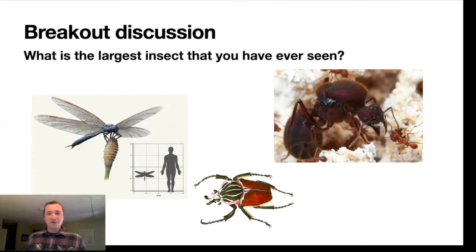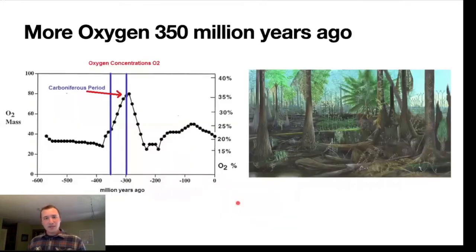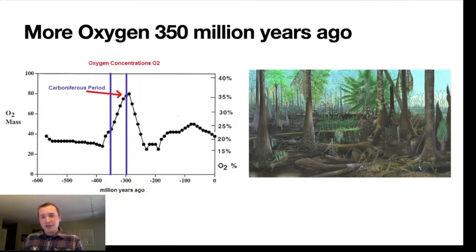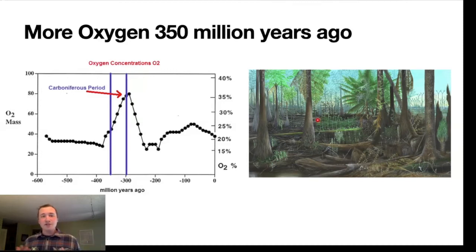We heard from some of you about the largest insects you've seen in the Spokane area and in travels. Let's now step back in time and talk about a historic period on Earth called the Carboniferous. The interesting thing about the Carboniferous period is that there was an increase in the capacity of plants on Earth to absorb carbon dioxide and produce oxygen. This increase was driven by the evolution of new kinds of vascular plants.